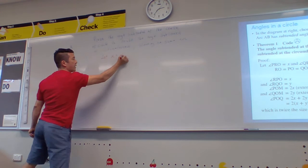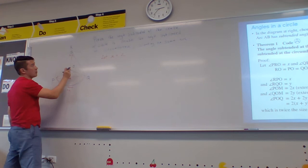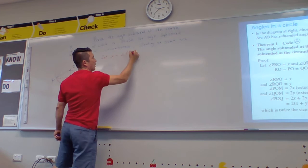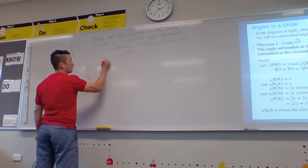What's this angle here? How do I do that? I say angle PRO, or if you want you can do ORP, but I usually like to go left to right, and then go PRO. So I've told them X is that.